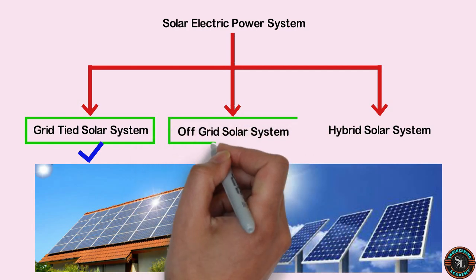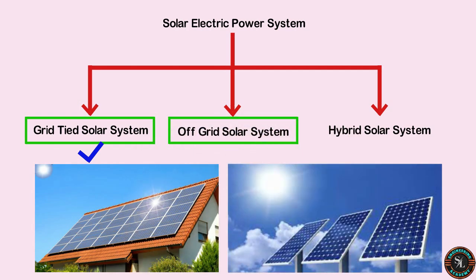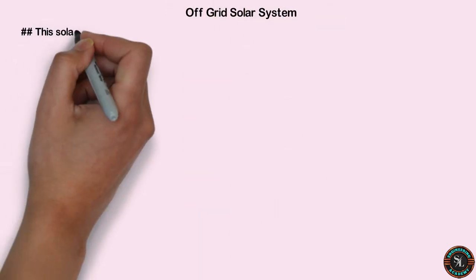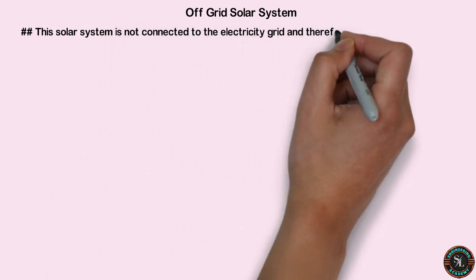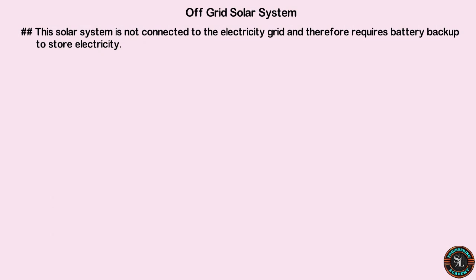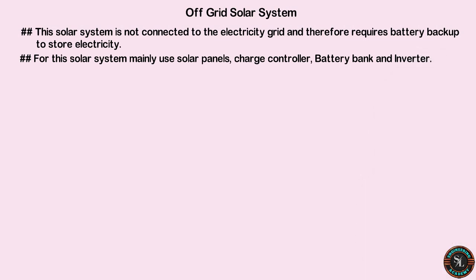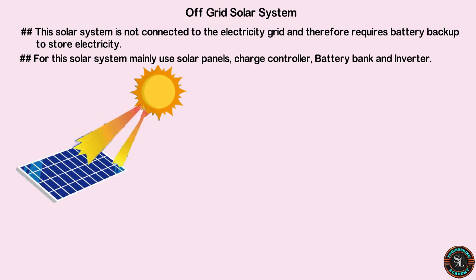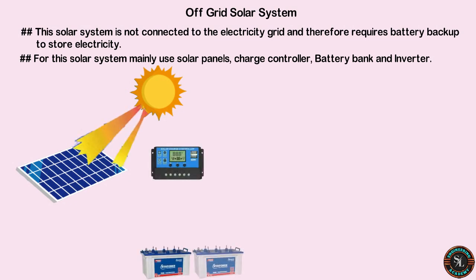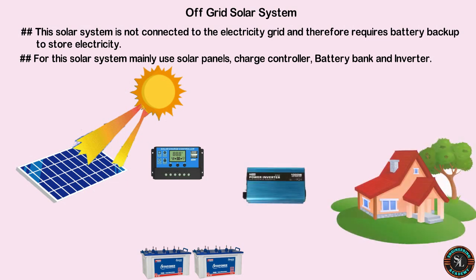Now let's see what the off-grid solar power system is. This is the topic I hope to talk about the most in this video, because we can make an off-grid solar panel system ourselves at home easily. This solar system is not connected to the electricity grid and therefore requires battery backup to store electricity. For this system we mainly need solar panels, a charge controller, batteries, and an inverter. It works by generating electricity from solar panels and using it to charge a solar battery via a charge controller. I will explain the off-grid solar system using a diagram.